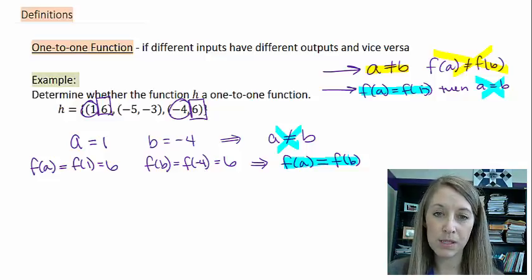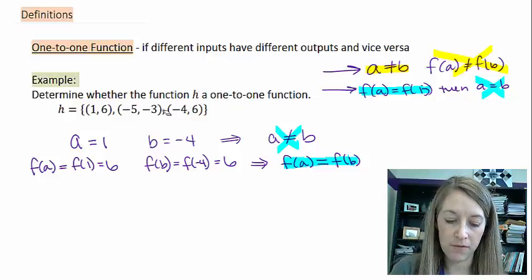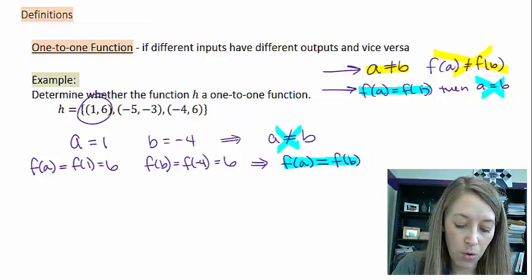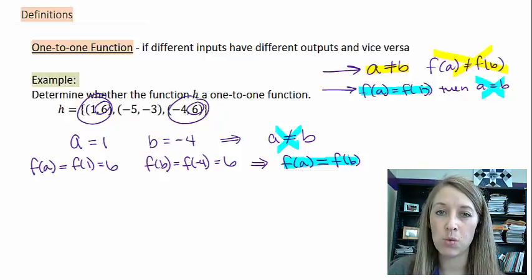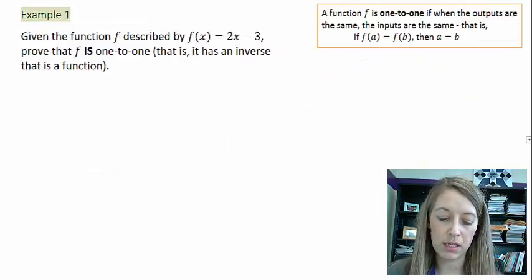Now this one was easy because I knew the answer before I even started. I saw my ordered pairs had repeat y values, so I knew it right away. So, this one was really obvious. Let's go ahead and do another example.